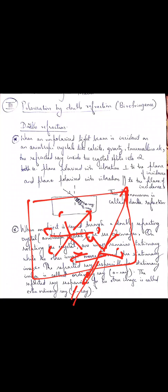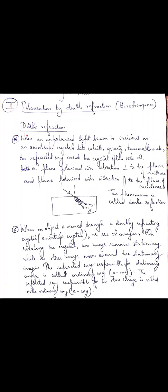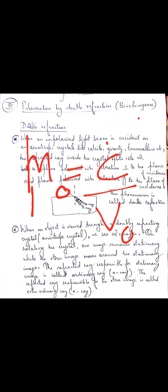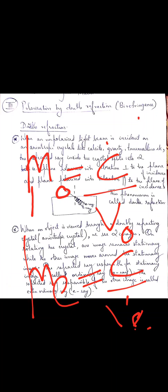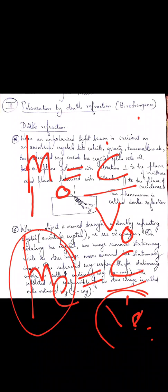That is the second point of difference. Because of their differences in velocities, the refractive index of the crystal for the ordinary ray — we write mu O — is given by the velocity of light in air divided by the velocity of the ordinary ray, that is C by V_O. Now, mu O will be a constant, whereas mu E, the refractive index of the crystal with respect to the extraordinary ray, is given by C by V_E. But V_E is different in different directions, so mu E will also be different in different directions.